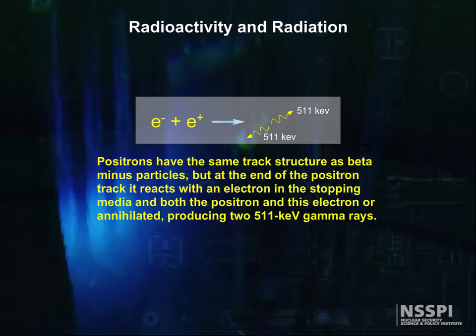Positrons have the same track structure as beta minus particles, but at the end of the positron track, it reacts with an electron in the stopping media, and both the positron and this electron are annihilated, producing two 511 keV gamma rays.